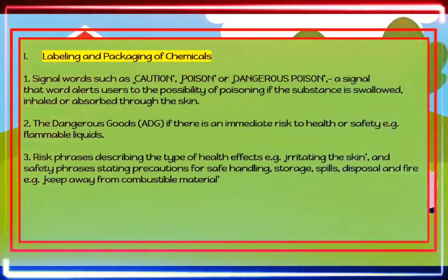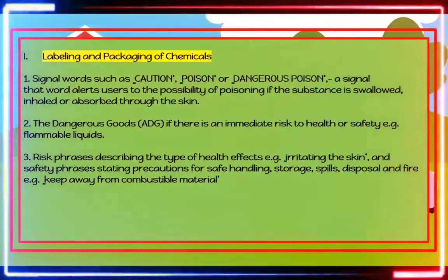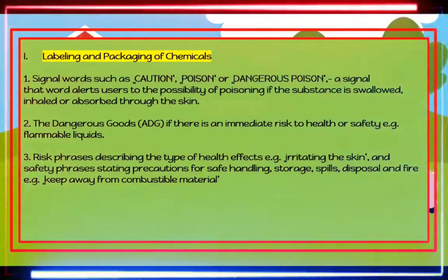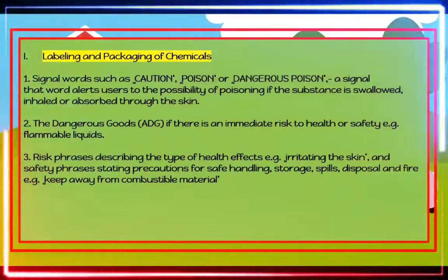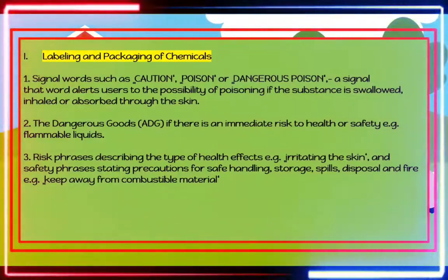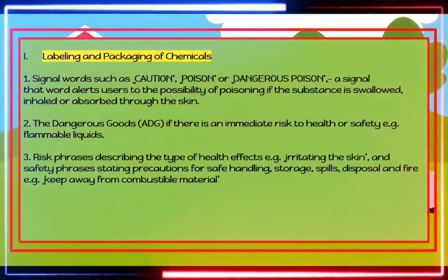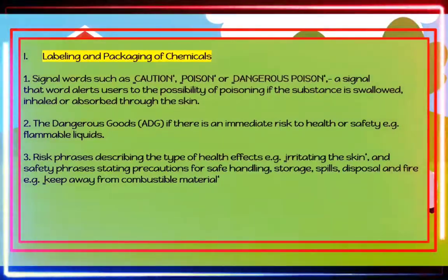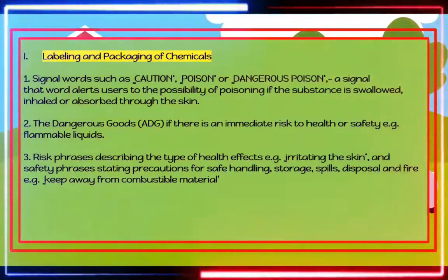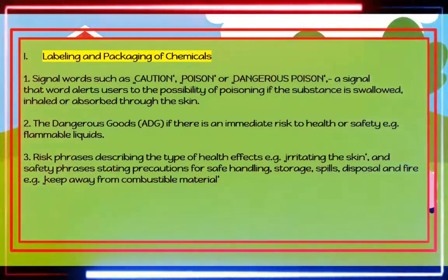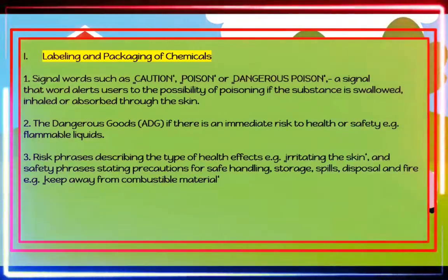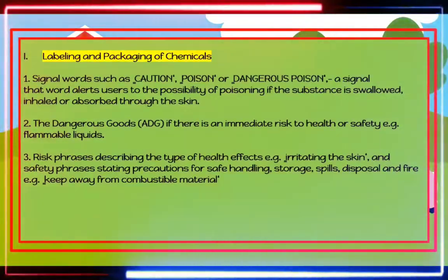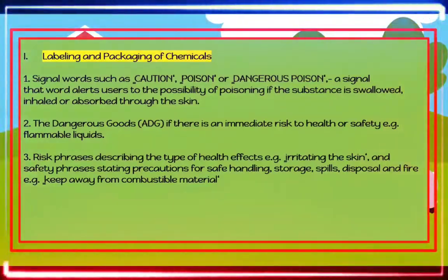Labeling and packaging of chemicals: Chemicals must be supplied in packages that are correctly labeled and suitable for the substance. Information on the label depends on the type of substance and the associated risk. Items to look for include: First, signal words such as 'caution,' 'poison,' or 'dangerous poison,' which alert users to the possibility of poisoning if the substance is swallowed, inhaled, or absorbed through the skin. Second, the dangerous goods (ADG) code if there is an immediate risk to health or safety, e.g., flammable liquids. Third, risk phrases describing the type of health effects and safety phrases stating precautions for safe handling, storage, spills, disposal, and fire, e.g., 'keep away from combustible material.'